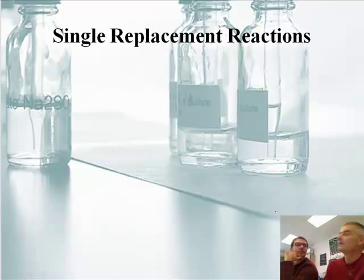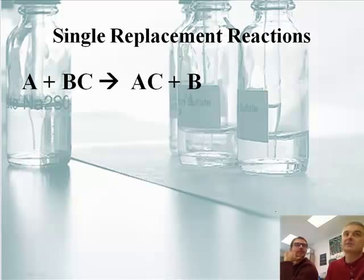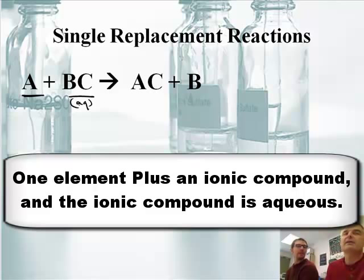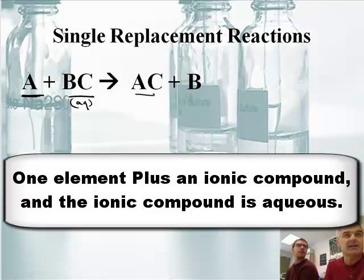Single replacement — we should talk about single replacement. Single replacement reactions are interesting. You have A plus BC. This BC will be an aqueous chemical, almost always. A is usually an element, plus some chemical BC. Basically, A decides he likes C better than B does, and B gets kicked out. So AB turns into AC plus B.